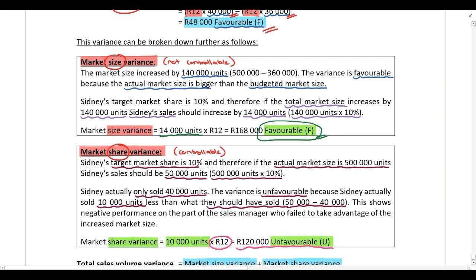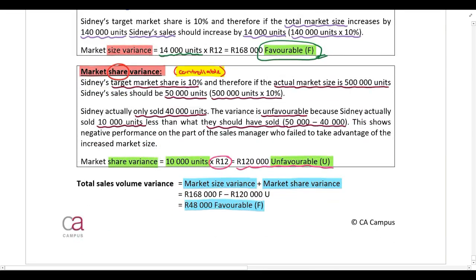They've lost market share — the fact that the market is bigger is favorable but not under the control of the sales manager. The market share variance is however under his control, and they should have sold 50,000 units but only sold 40,000. The target market share was 10% and the actual was only 8%, showing negative performance — the sales manager failed to take advantage of the increased market size. As a result of these calculations, the sales manager should not be paid a bonus.